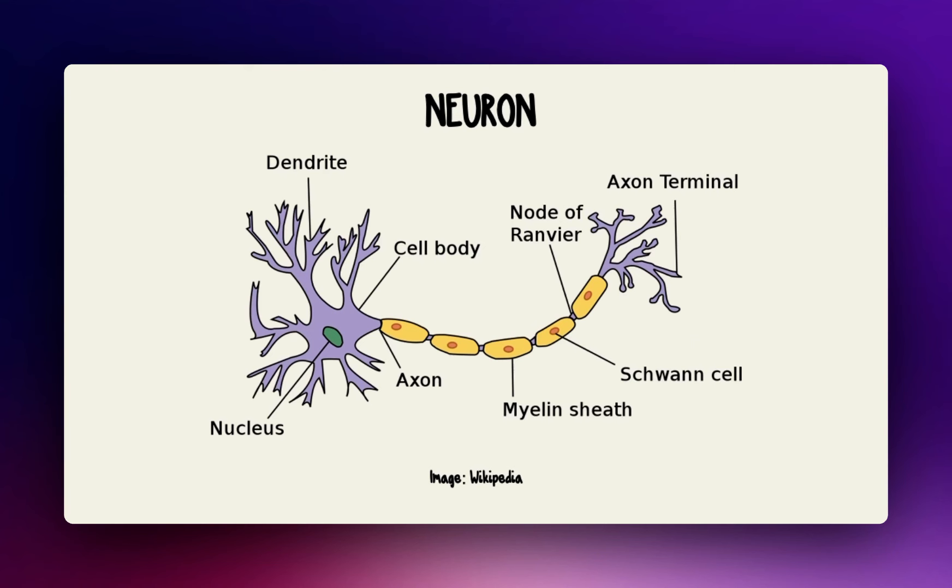Neurons receive electrical signals from several other neurons, and depending on their strength, the neuron can either activate or stay put.